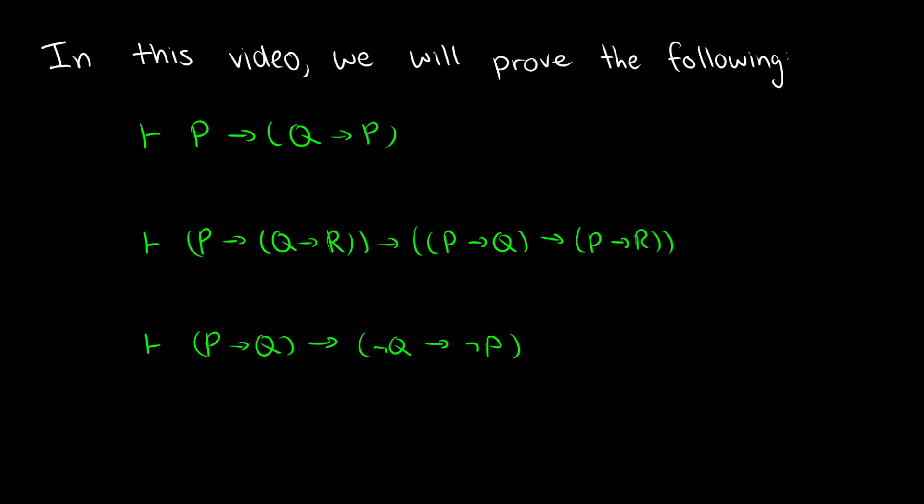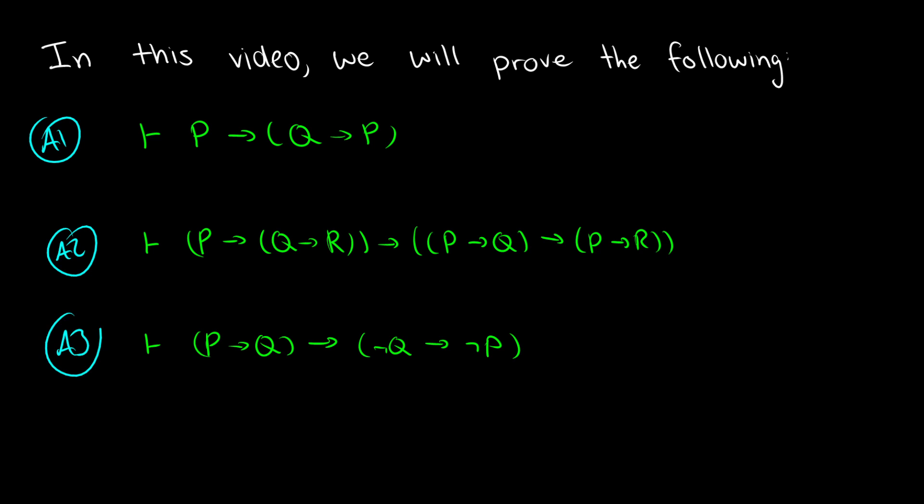These three theorems comprise three axioms — let's call them A1, A2, and A3. From just these three, along with the contradiction symbol, the arrow, and propositional variables, you can derive literally every single theorem in logic. Whatever you need to prove in logic, you can prove everything from just these three axioms — it is not easy but it is doable. I took a course called axiomatic logic where we spent three or four weeks proving things with just these. If you have any questions, post them in the comments below.